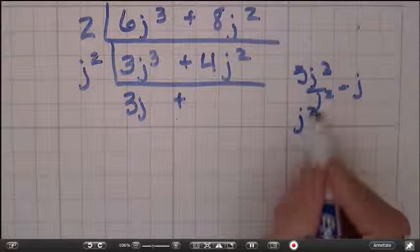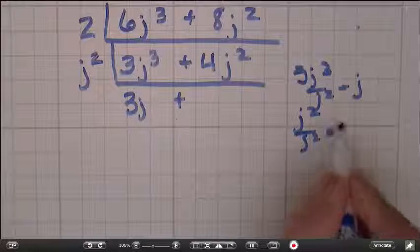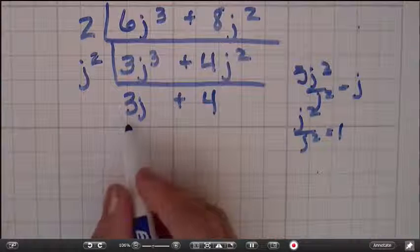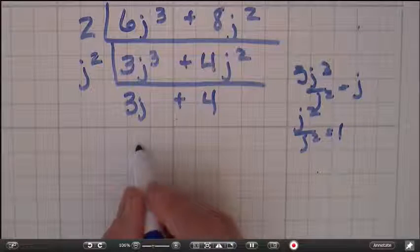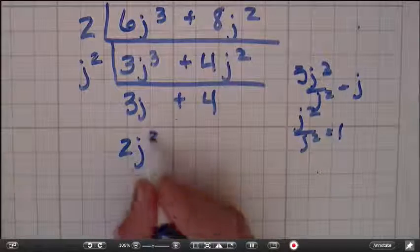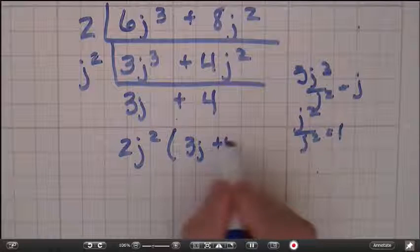So this is 3j plus, and if I take j squared over j squared, I get 1. They cancel each other out. So I just bring down my 4. So factor this, it's 2j squared times 3j plus 4.